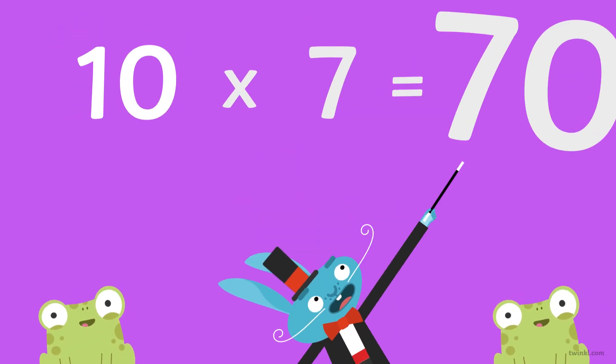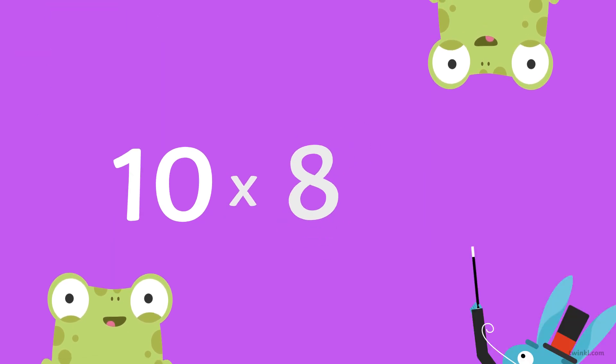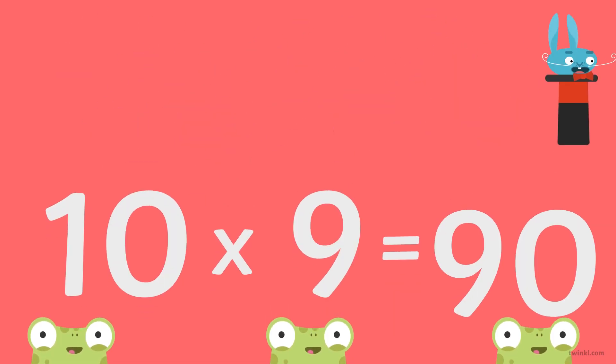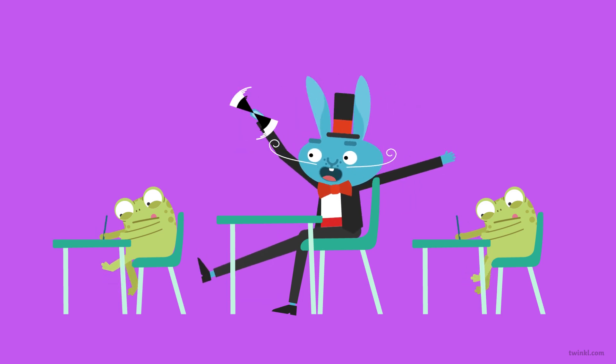Ten times seven is seventy, ten times eight is eighty, ten times nine is ninety.